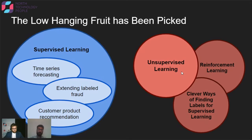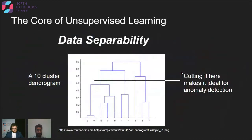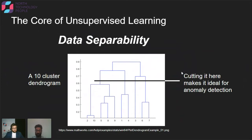I went back to basics, using very traditional machine learning techniques — just unsupervised learning — to understand what the data is. In my opinion, the core of unsupervised learning is understanding how the data separates: what data points are close together, and therefore very similar, and what data points are very far apart.